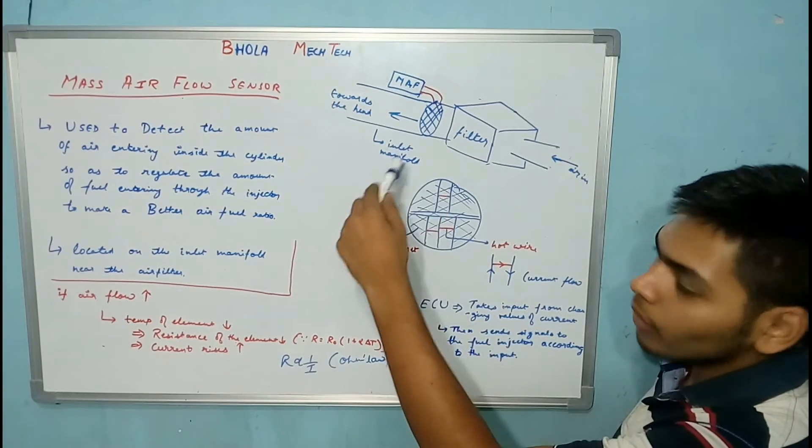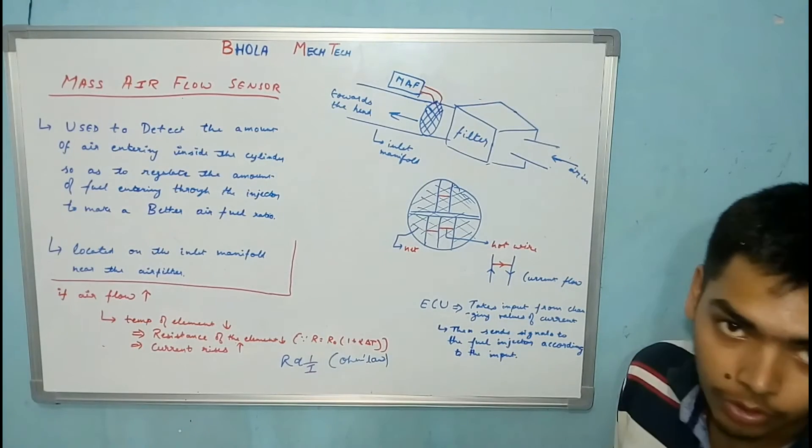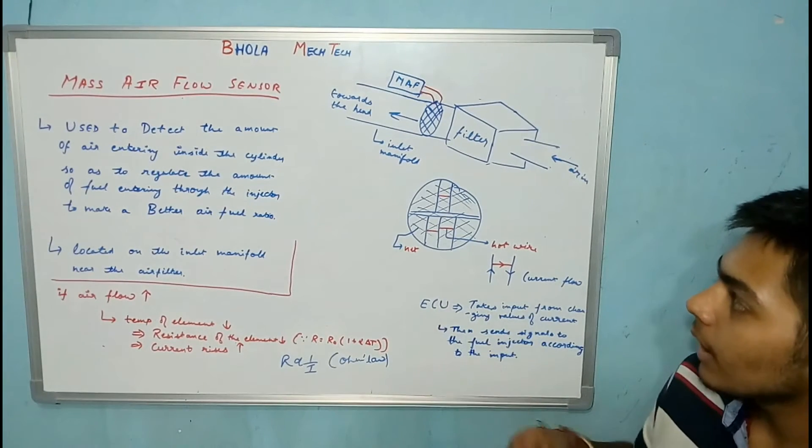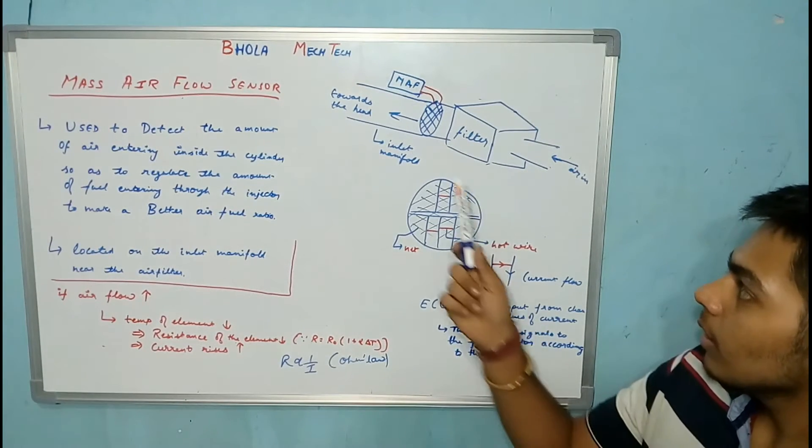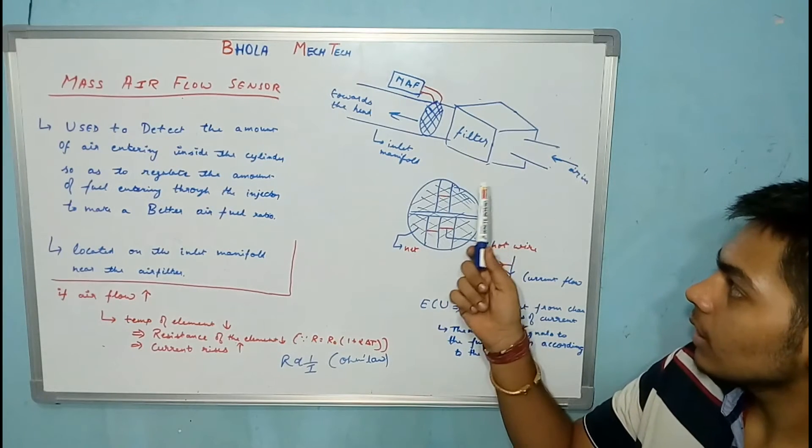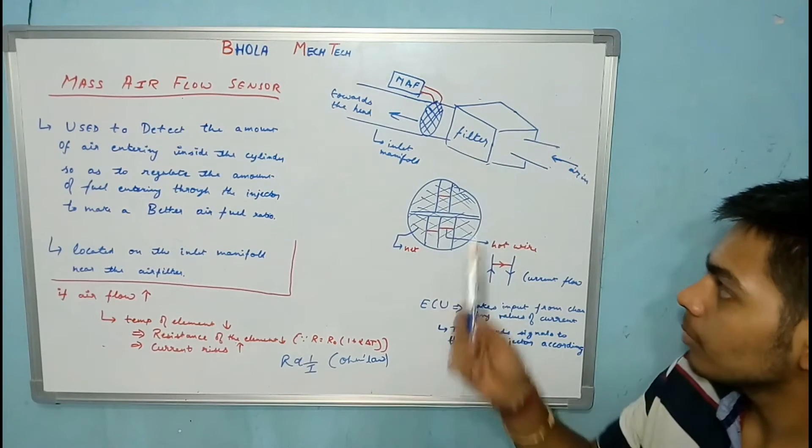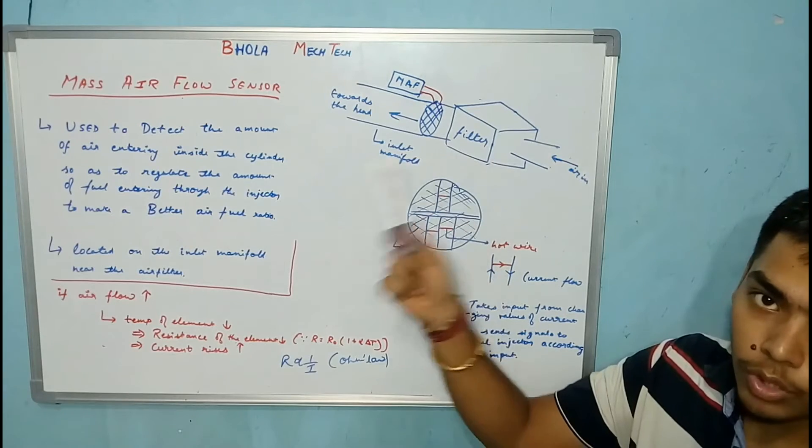Air then flows to the inlet manifold, then cylinder head, and then to the cylinder. This is the path that air travels, and the mass sensor is located just after the air filter because this is the amount of air that is going to enter into the cylinder.